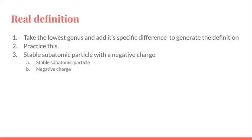Here, the stable subatomic particle is the lowest genus, and then the specific difference is the negative charge. Yeah, that'll be all for this episode.